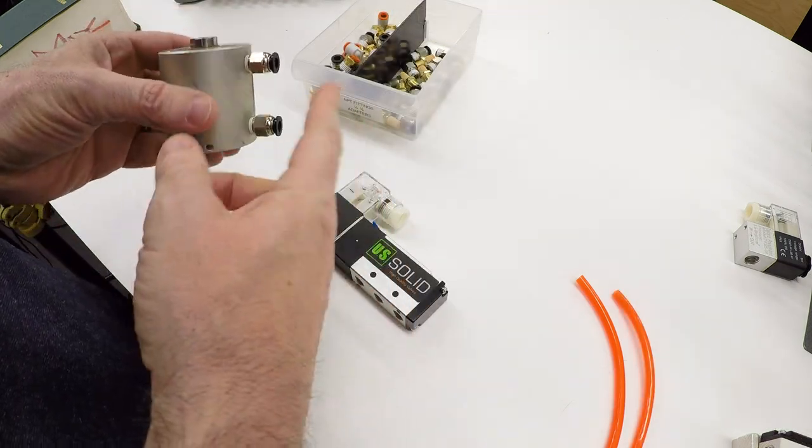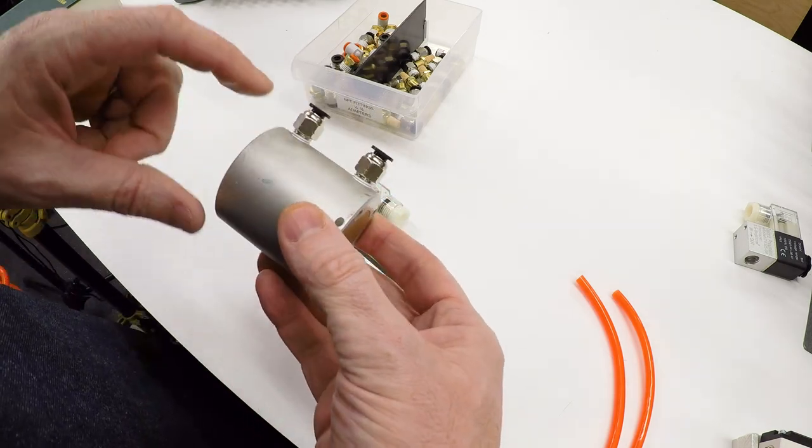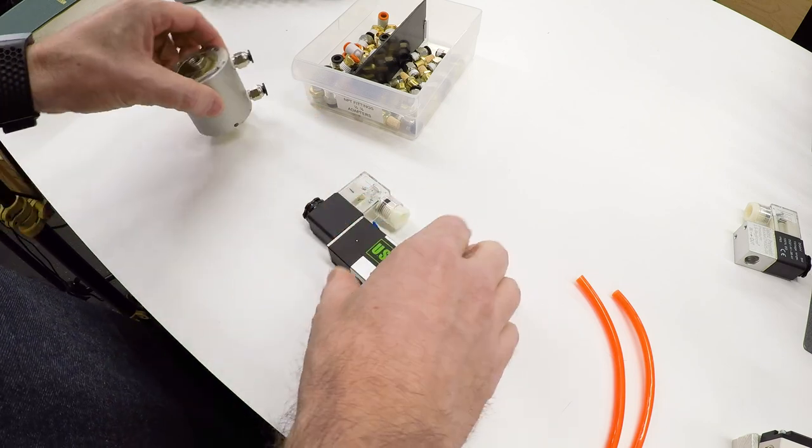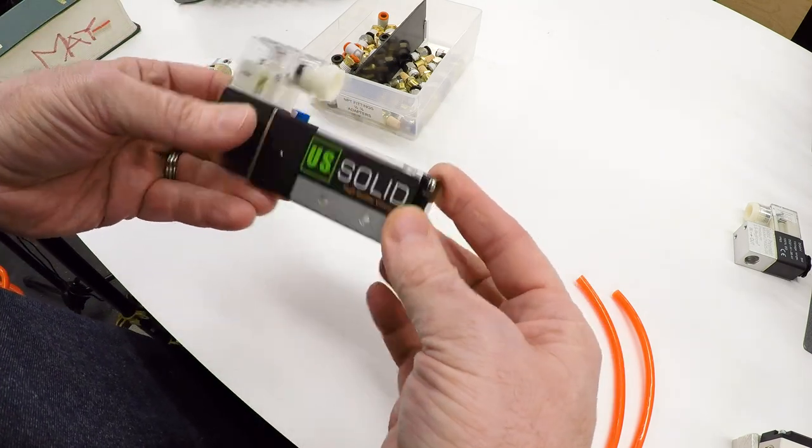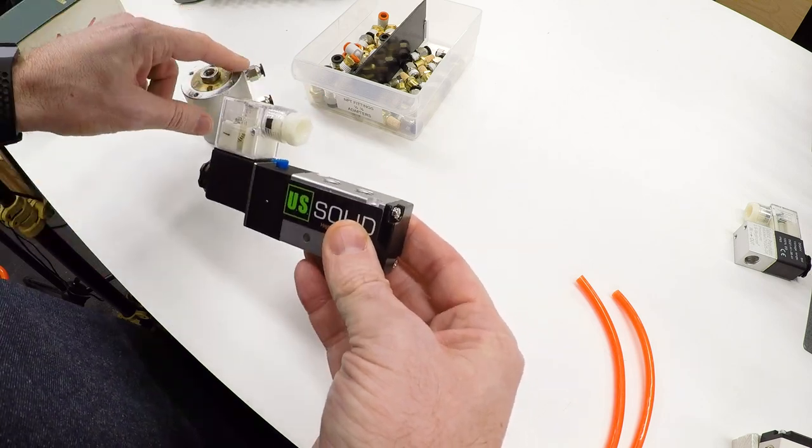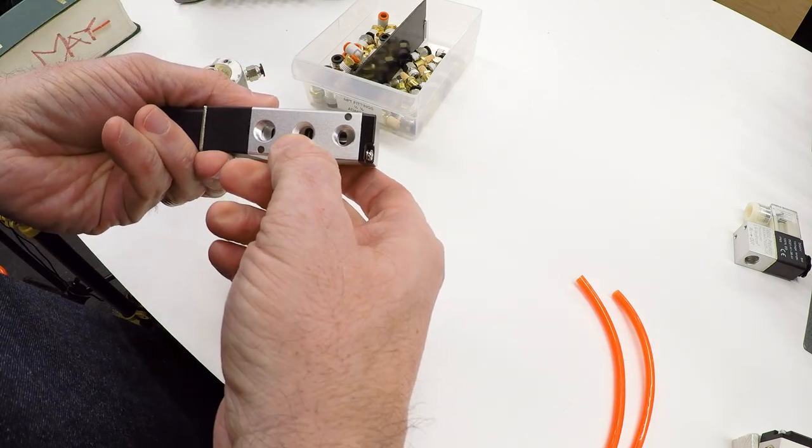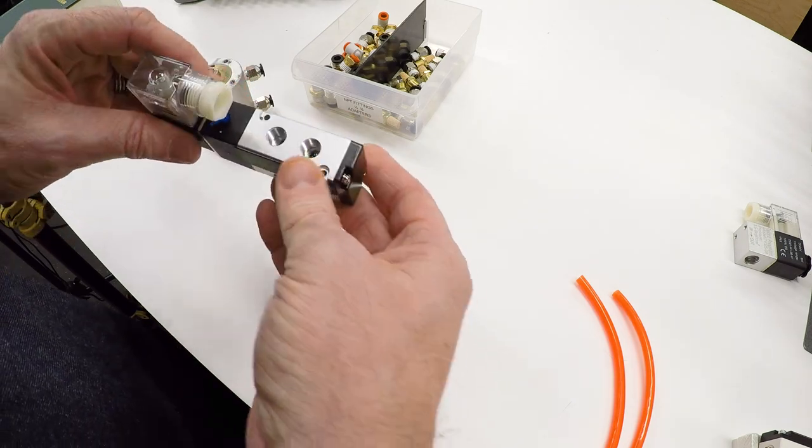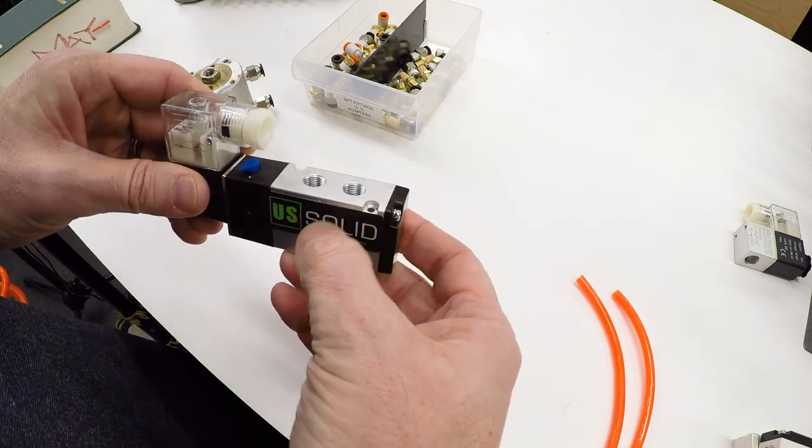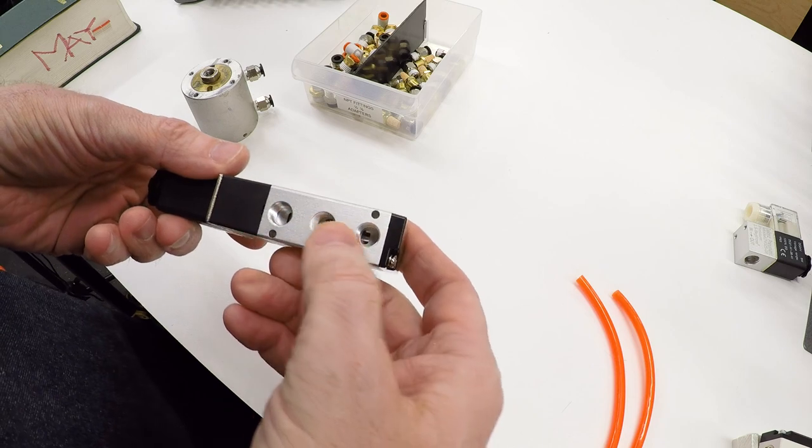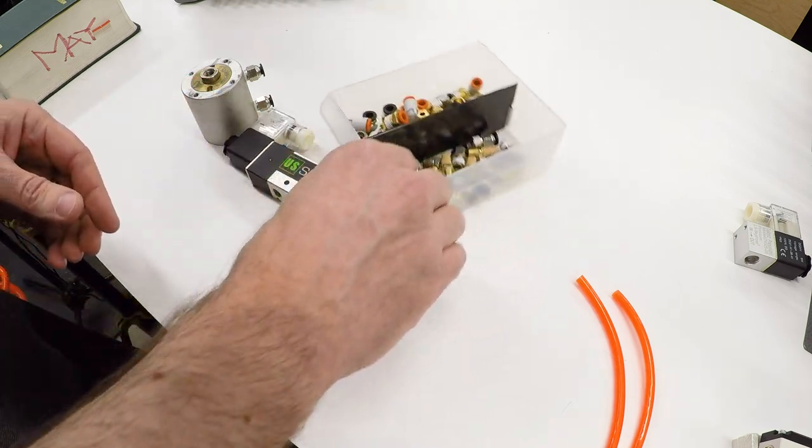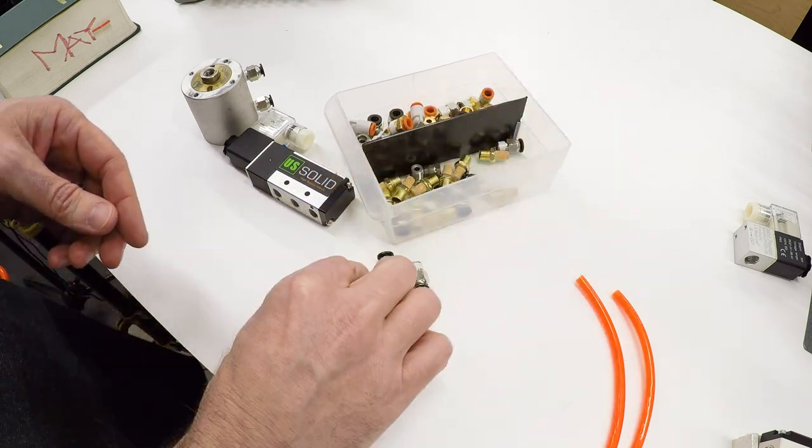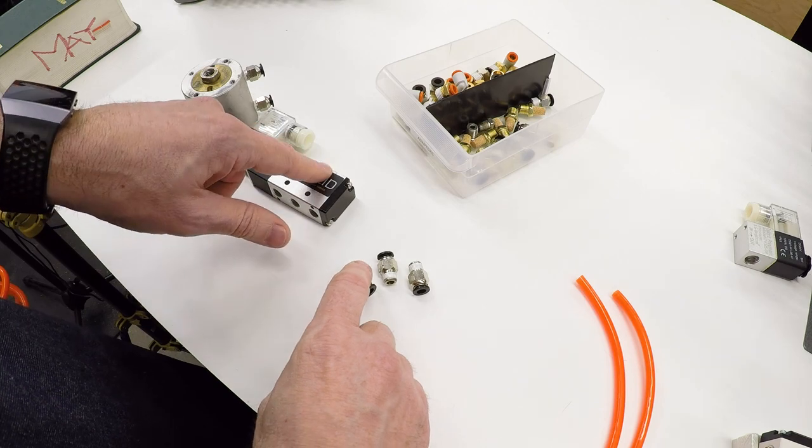I've got a double acting cylinder here and I have already put quarter inch push to connect fittings on the cylinder. So those are ready to go and we're going to use it with a 5-2 valve. These two ports on the top need to be connected to the cylinder. I need to connect pressure to the bottom and the other two are exhaust ports for the cylinder. This particular valve has eighth inch NPT fittings in it. So I'm going to use eighth inch NPT fittings to make the connections.